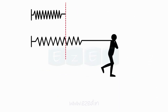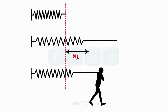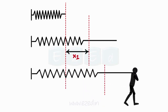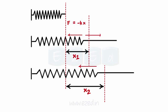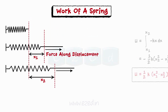How is work done by a spring? Consider an undeformed spring of stiffness k. Suppose a man deforms the spring by pulling it up to the length x1. Then another man deforms the same spring by pulling it to length x2. The spring has its own force which will try to bring back its true length. The spring force is given by negative kx, as the actual force is opposing the spring force. Work done is calculated in the direction of the deformation of the spring. Therefore, work done by the spring between position 1 and position 2 is given by the following equation.